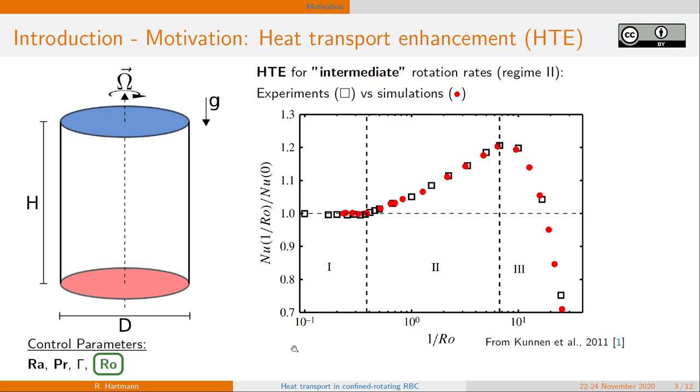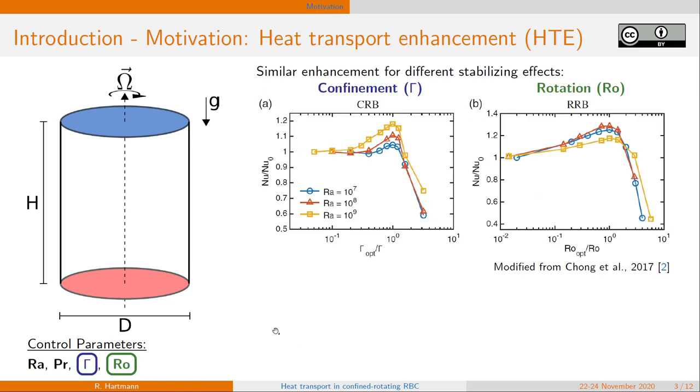So if only the Rossby number is varied, it's known to get heat transport enhancement for an intermediate range of Rossby numbers.